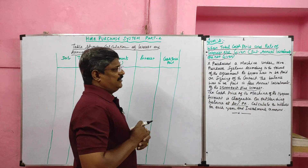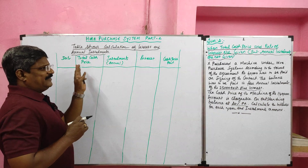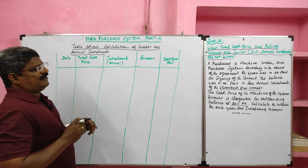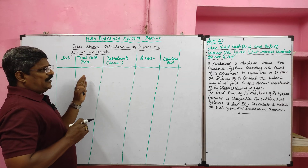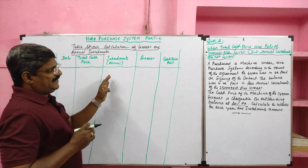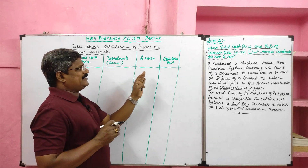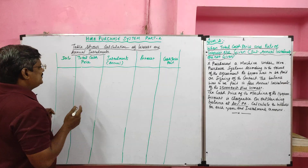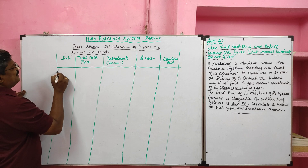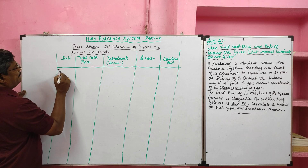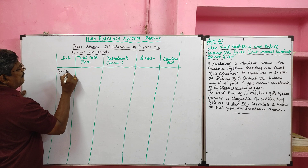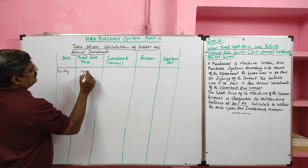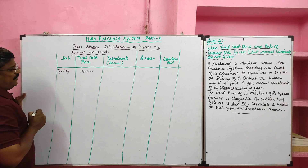Here, rate of interest and cash price are given; annual installments are not given. The table I have drawn shows the calculation of interest and annual installment. The columns include: date, total cash price, interest, installment, and cash price. Since dates are not given, I am using year labels. At the first year beginning, the total cash price of the machine is ₹1,40,000.